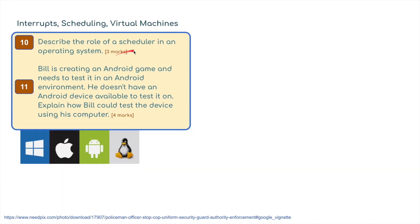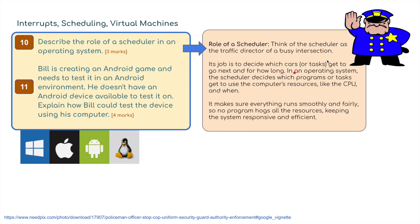Question ten: describe the role of the scheduler in an operating system - three marks. Think of the scheduler like a traffic director at a busy intersection. Its job is to decide which cars or tasks get to go next and for how long. In an operating system, the scheduler decides which programs or tasks get to use the computer's resources like the CPU, and when. It makes sure everything runs smoothly and fairly so no programs hog all the resources, keeping the system responsive and efficient.